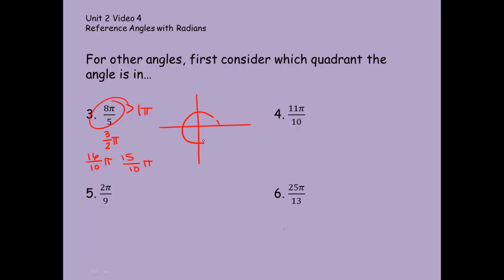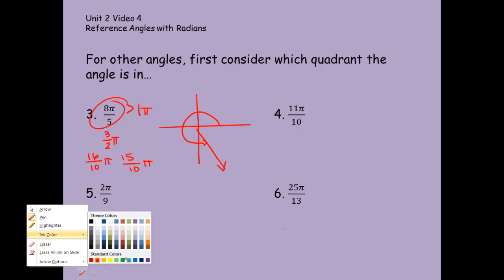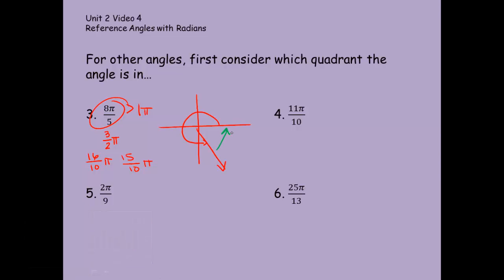Here's this angle all the way around in quadrant 4, which means to find a reference angle in quadrant 4, you're going to have to go this way to the x-axis. You always go the shortest way to the x-axis. To complete two rotations, 2π would be 10 over 5. So the difference would be 2/5 π is the reference angle, 2/5 π radians. That one was a little bit tough, so maybe you want to watch that again. I'd like you to go ahead and give 4, 5, and 6 a try and we're going to talk about those first thing tomorrow.